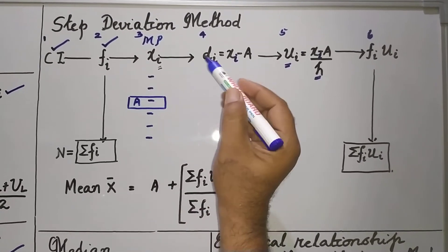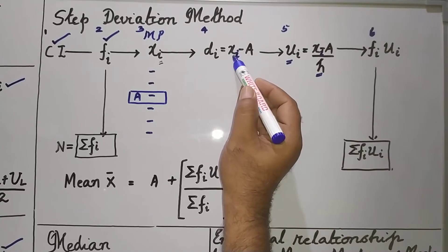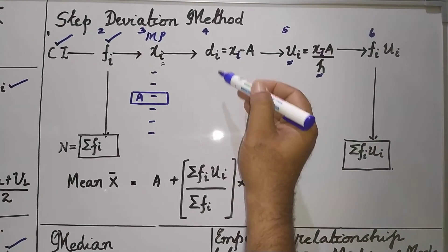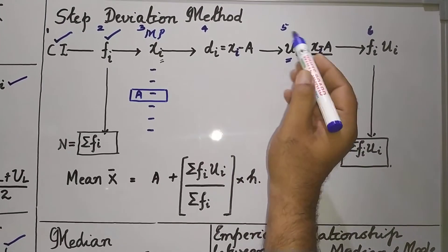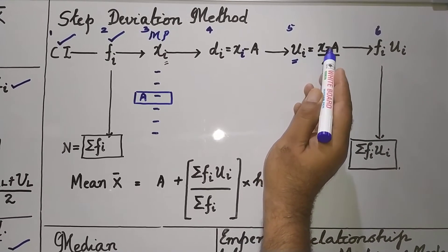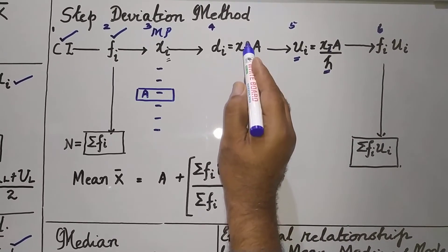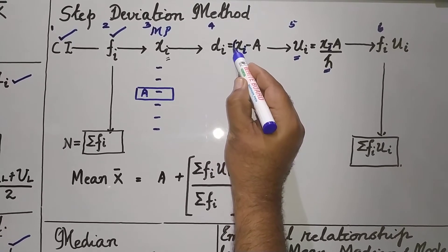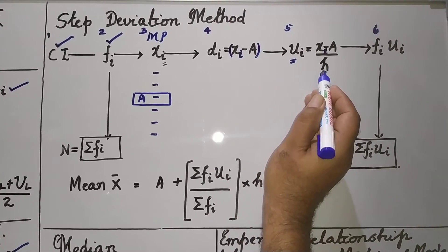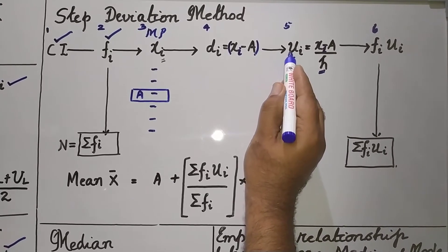After that, find out the deviation using the formula: di is equal to xi minus A. After you find the deviation, find out the step deviation ui, that is equal to xi minus A divided by H. Whatever value you have got for the deviation, if you divide that by H — where H is the class size — you will get the step deviation.